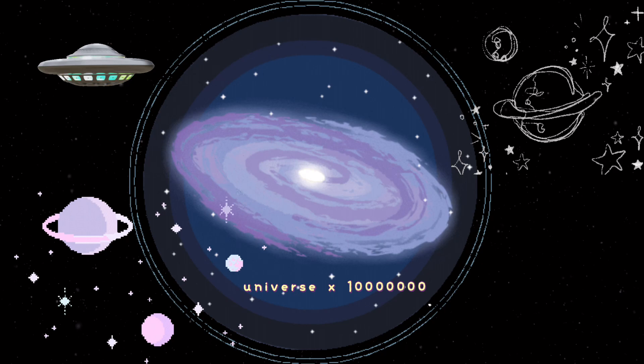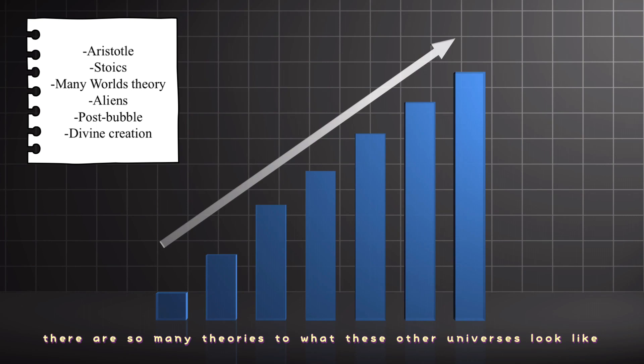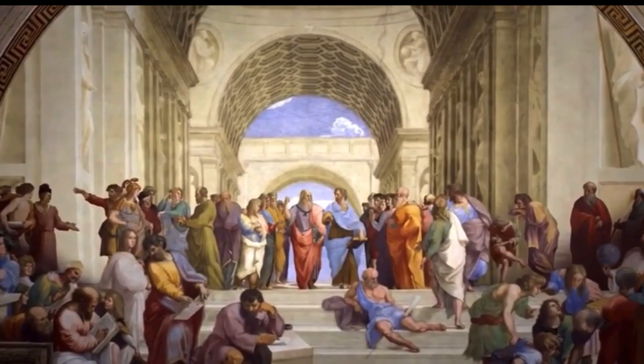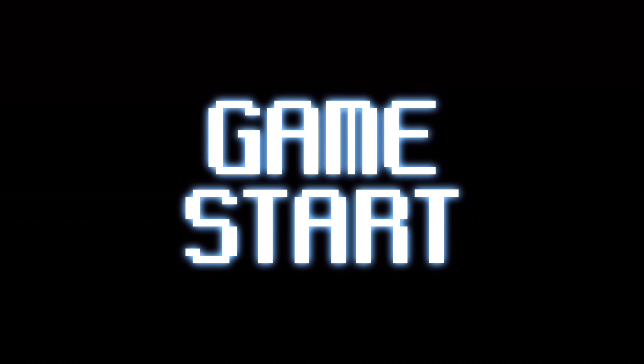There are tons of theories about what type of multiverse we actually live in. Some of these theories date back to ancient Greece. As you guys probably know, the multiverse is the idea that there are multiple universes that aren't visible to us but coexist with our universe. Two ancient Greek schools of thought had their own theories about the multiverse.